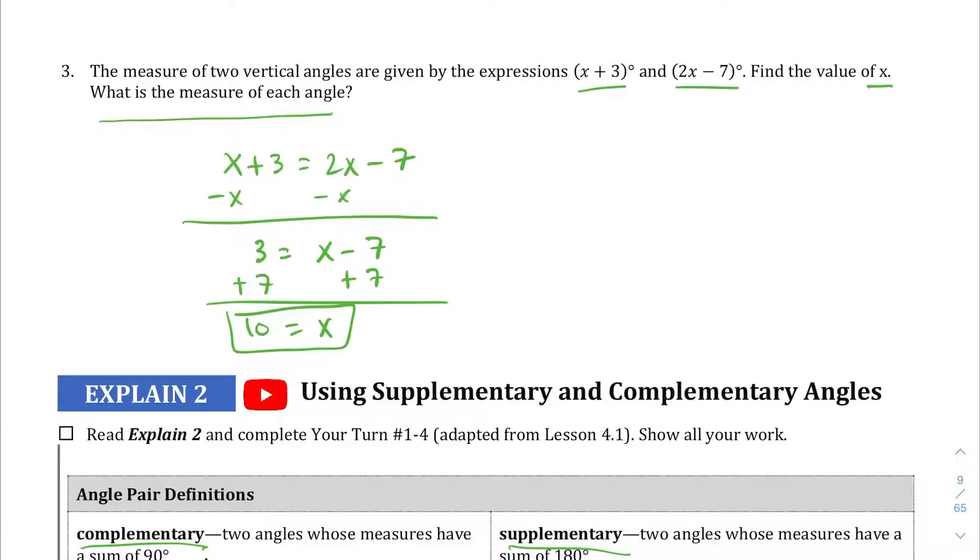The next part, I have to find the measure of each angle. I'm going to use the easier one. Since I know x equals 10, 10 + 3, it's going to be 13 degrees for both angles, since they're vertical and they're congruent.